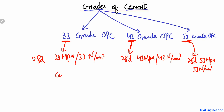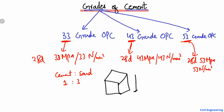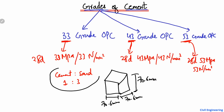To define these grades, a cement and sand mixture in a ratio of 1:3 is used to construct a small mortar cube with dimensions of 70.6 mm on each side — 70.6 mm height, width, and breadth. This cube is made and tested in the laboratory.